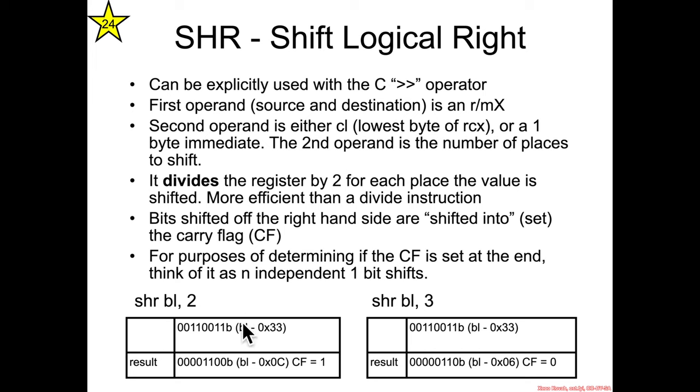And the same sort of rule occurs here, where whatever the last bit was that was shifted to the right, it's going to go into the carry flag. So here 00110011, if we shift two bits, shift one, shift two, then this one right here goes into the carry flag, and the rest of them are shifted down.